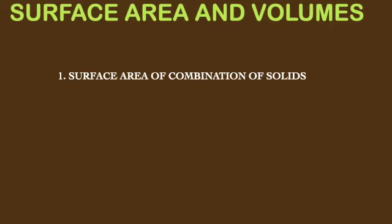The solids we know are cuboid, hemisphere, sphere, cylinder, and cone. When we combine any two of these solids, we get a combination of solids. The first subunit we studied was surface area of combination of solids, and we solved all the problems related to exercise 15.1, which is based on surface area of combination of solids.